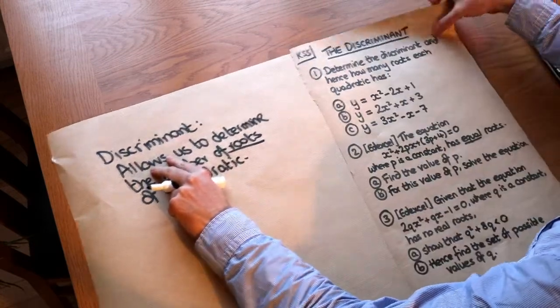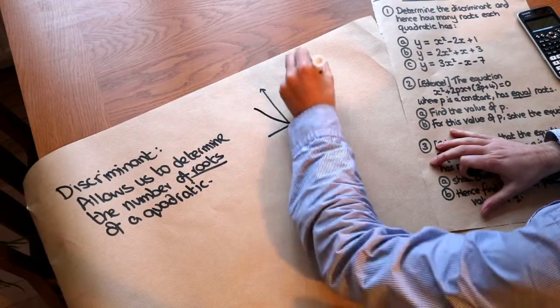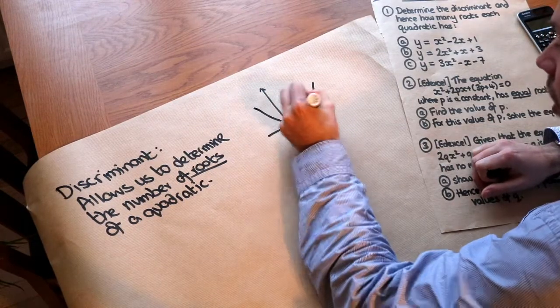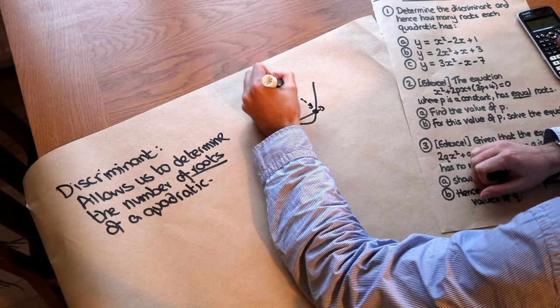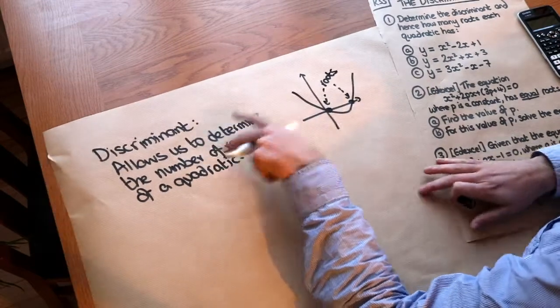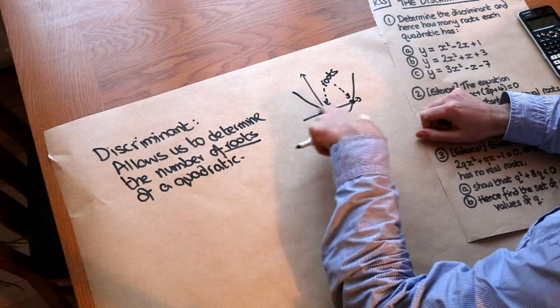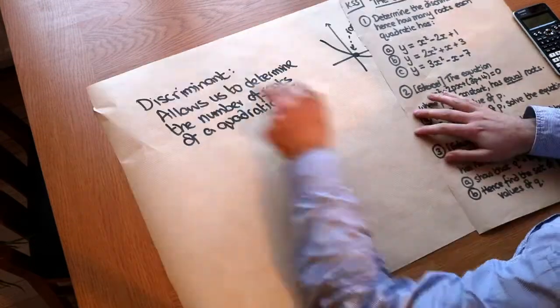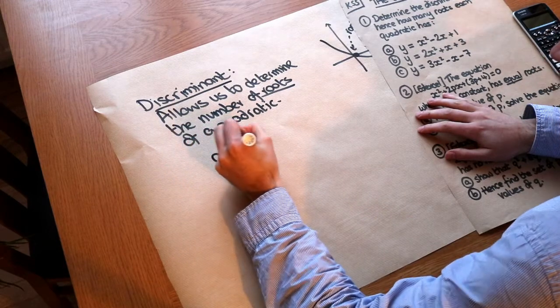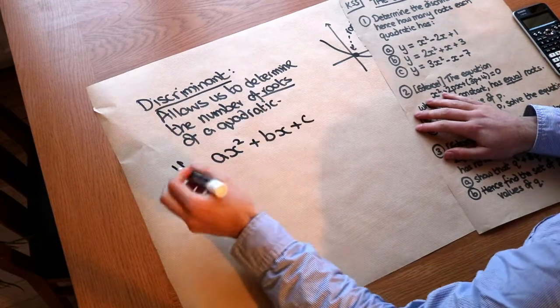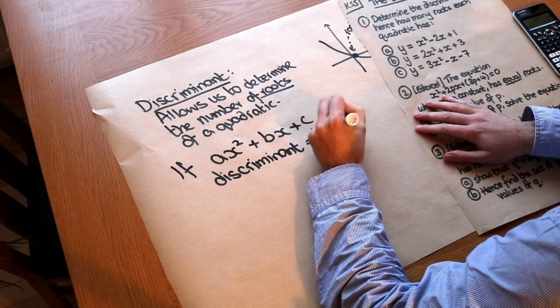But what do I mean by roots? Well if I was to sketch a quadratic graph, we know it looks something a bit like this, and the roots are the x-intercepts, as we explored in another video. So in this particular case we can see we have two roots, but there might be no roots, or it might sort of clip the x-axis where we seem to only get one distinct root. And the way we determine the discriminant is this: if we have a quadratic ax² + bx + c, then the discriminant is equal to b² - 4ac.